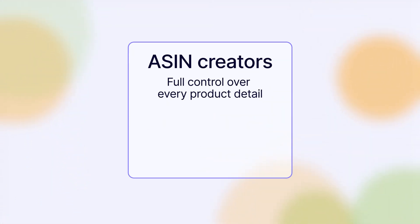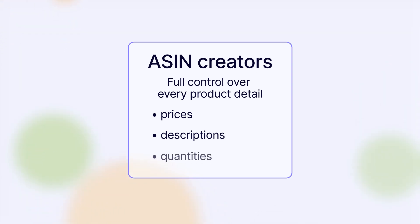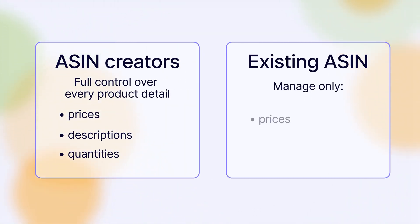ASIN creators have full control over every product detail, including prices, descriptions, and quantities. If your offer is assigned to an existing ASIN, you can only manage pricing and quantity.